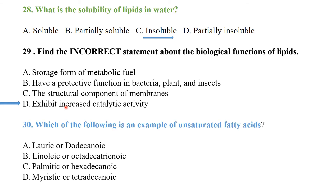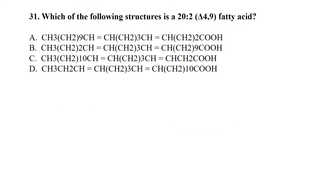Q29: Which of the following is an example of an unsaturated fatty acid? Linoleic acid and octadecatrienoic acid are unsaturated fatty acids. Q30: Which structure is 20:2 delta 4, 9? It is a 20-carbon fatty acid with two double bonds at positions 4 and 9.